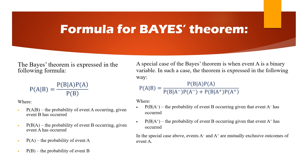A special case arises when event A is a binary variable. In such a case, the theorem is expressed in the following way, where event A and A-bar are mutually exclusive outcomes of event A.